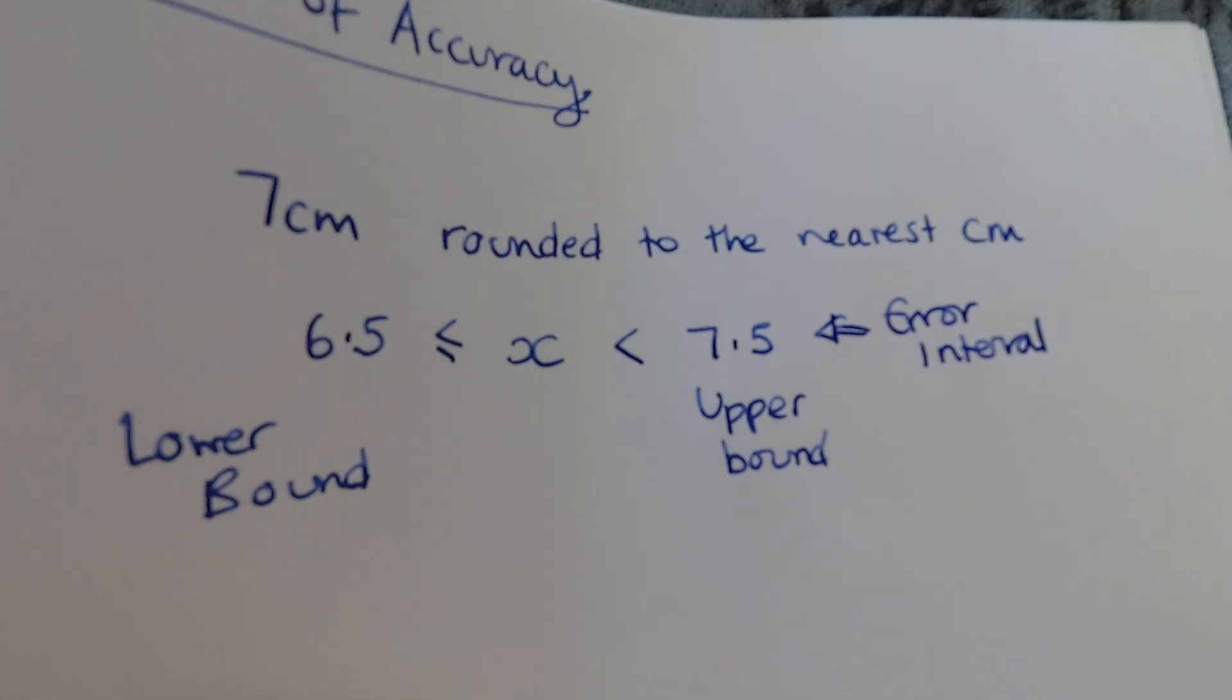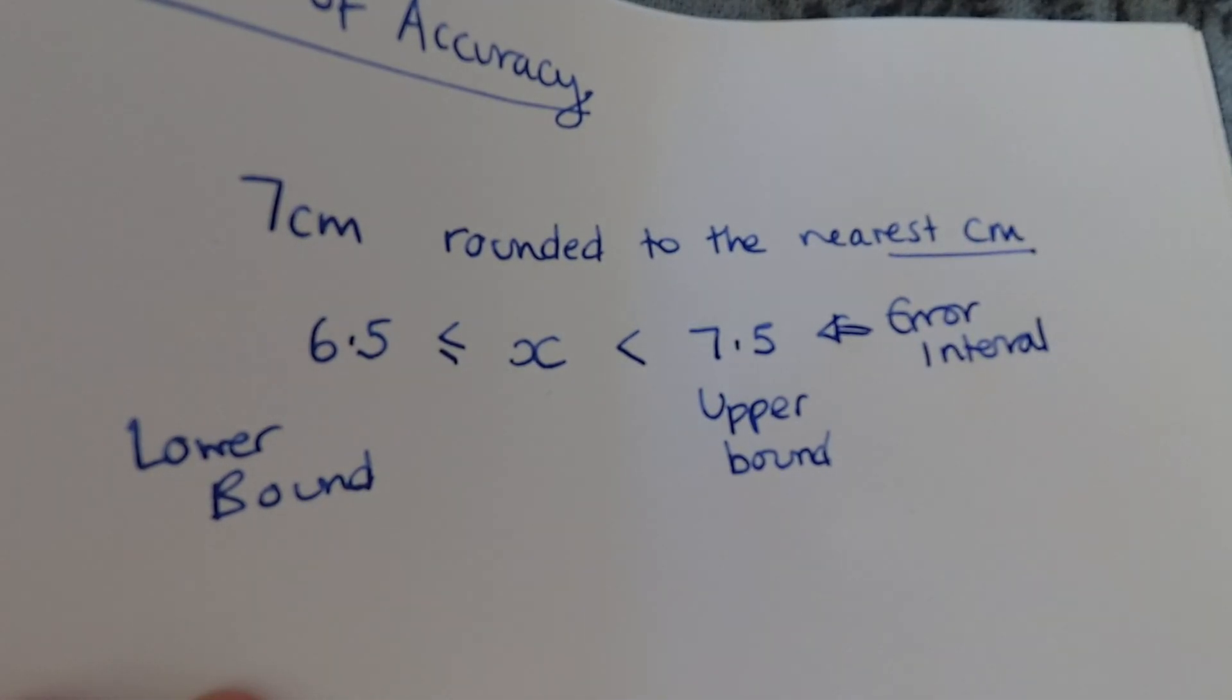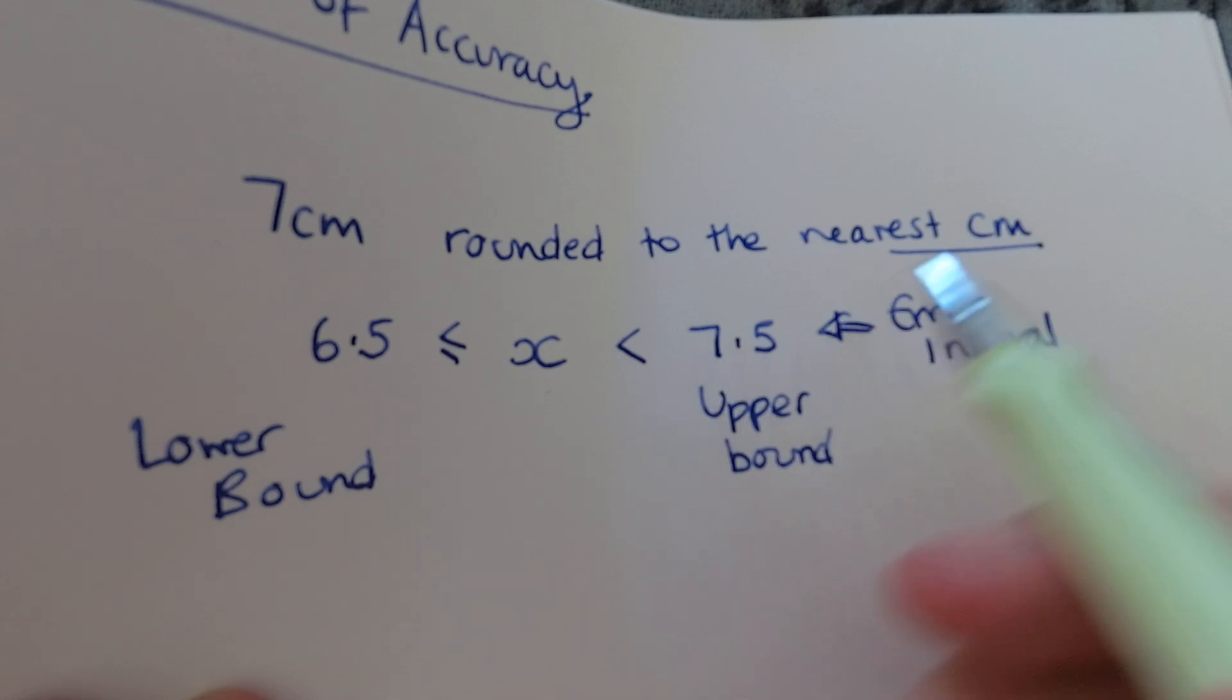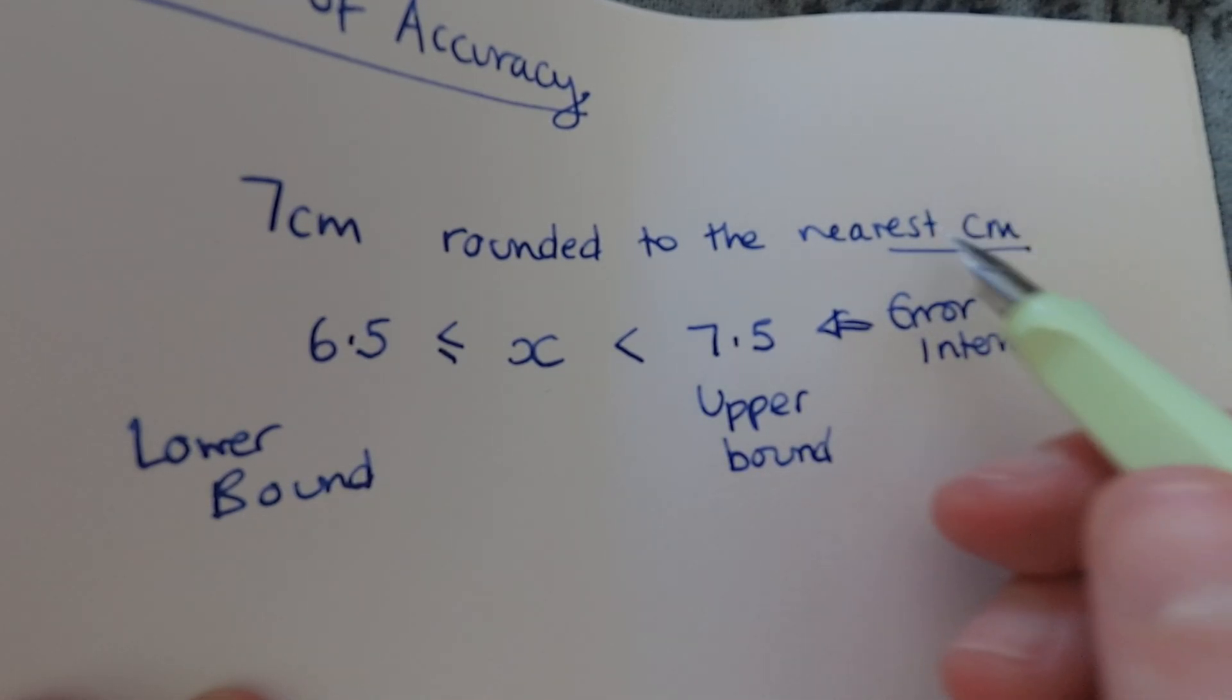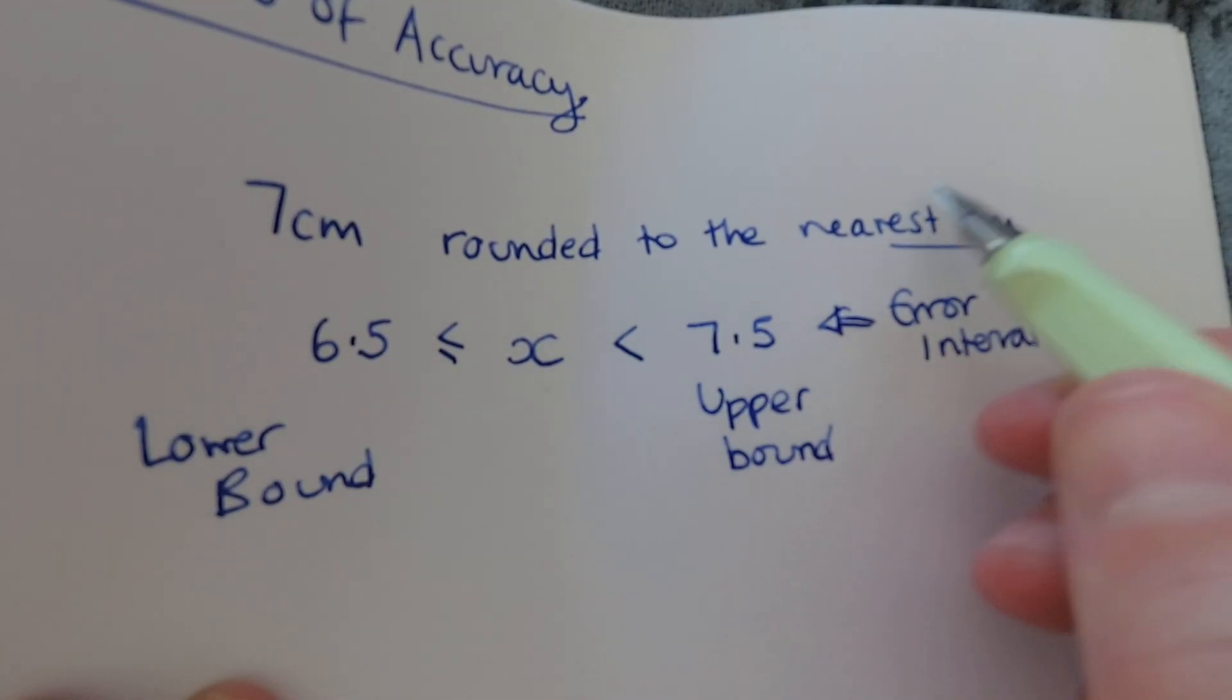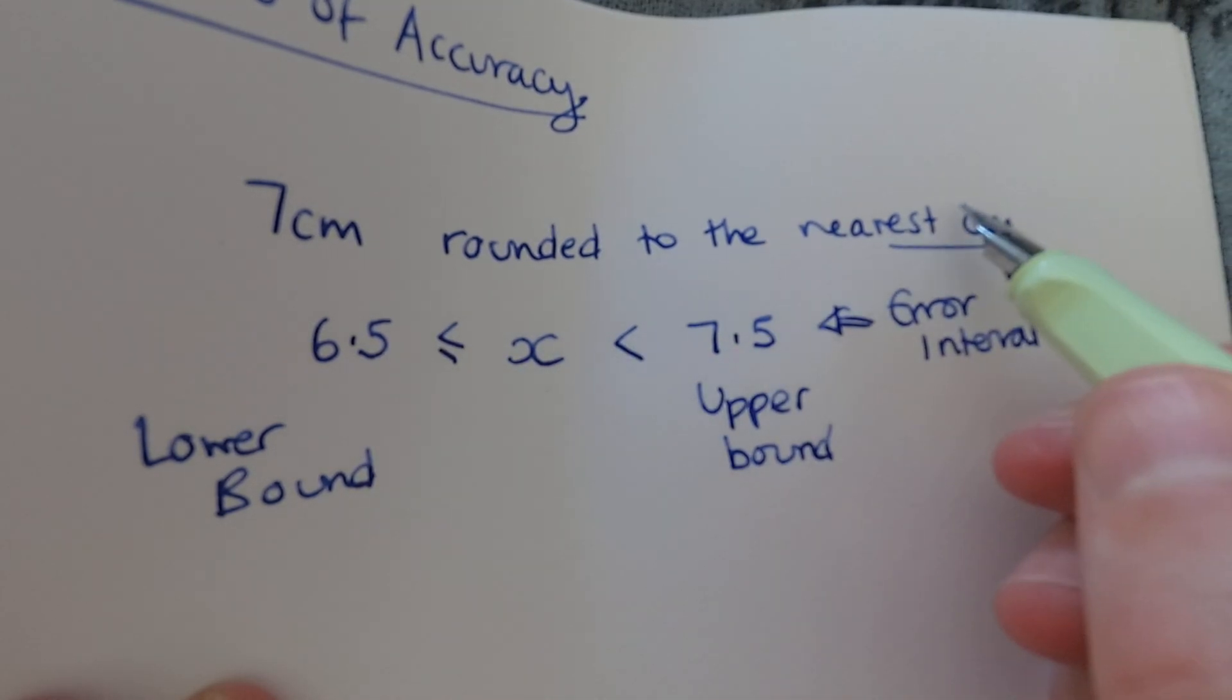One more thing to think about: we're told that they've rounded to the nearest centimeter. Our error interval is always going to be the same width as the accuracy that you're measuring to, so if you did 7.5 minus 6.5 you'd get 1, and we're rounding to 1 centimeter, so this range has to be the same as this.